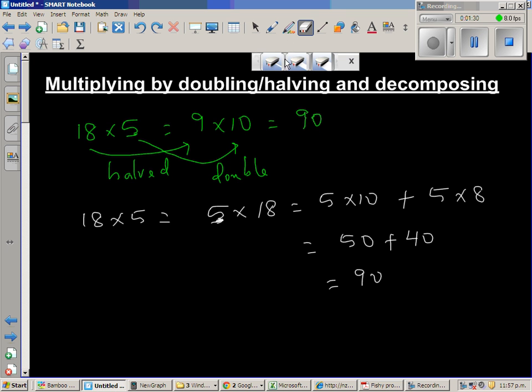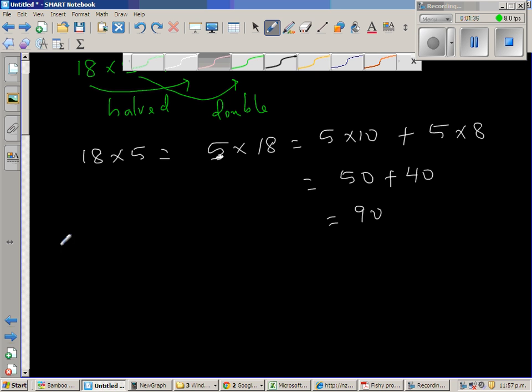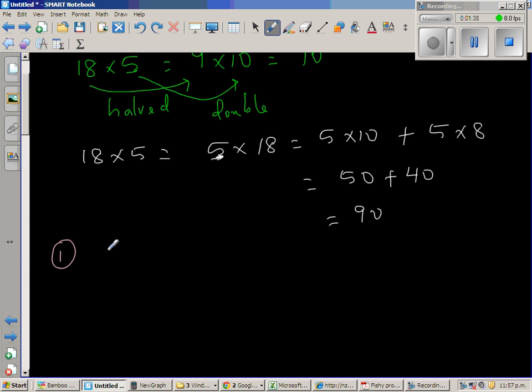Let us use these two strategies to do two examples that I have selected. So let us start the first question. The first question is 43 times 28. So let us start the doubling and halving. 43 times 28.